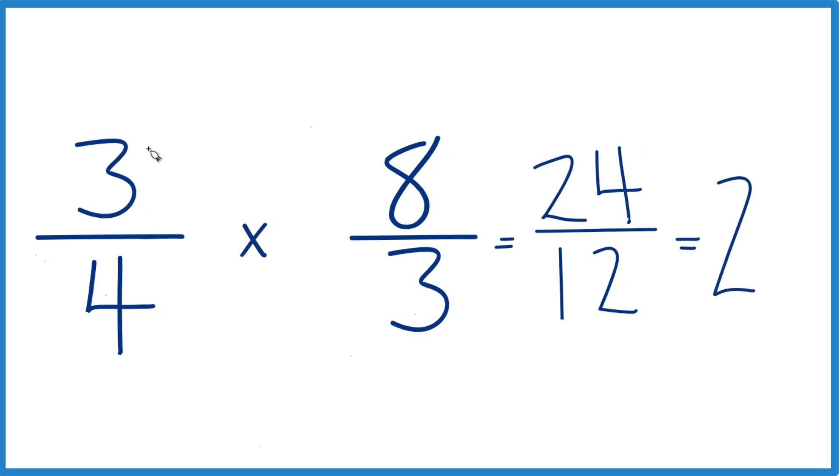So in answer to our question, when we take 3 fourths times 8 thirds, or 3 fourths divided by 3 eighths, we end up with 24 twelfths, which we can simplify down to 2.